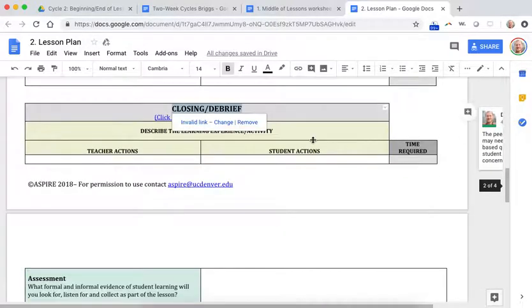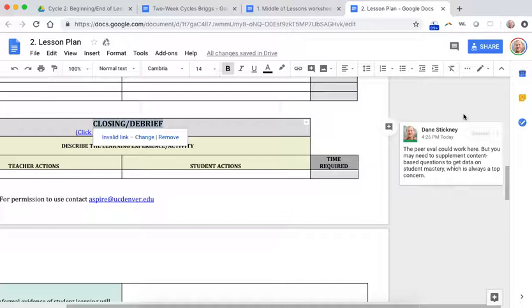And then similarly, I said this in the video already, this closing, that could be where the peer evaluation could come. But do know that the peer evaluation sheets that I linked to don't have any content questions. So you want to get that peer evaluation information, but you want to get a measure for how your students did that day too. So you may need to have an exit ticket and a peer evaluation or rework one of the peer evaluations to include some content questions.